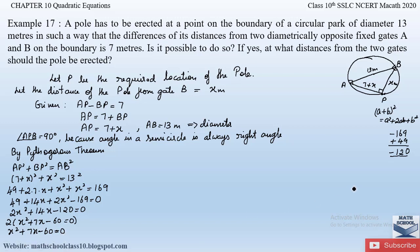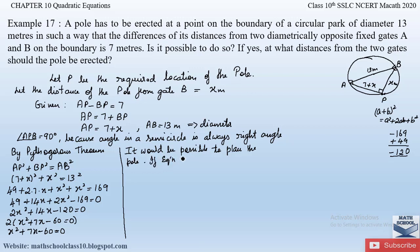We have obtained a quadratic equation of the form ax² + bx + c = 0. It would be possible to place the pole if this equation has real roots. We can check this by determining the discriminant. Comparing with the standard form, a = 1, b = 7, and c = −60.